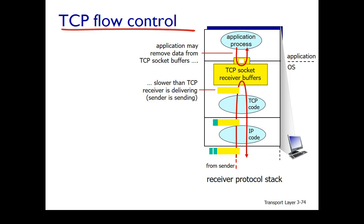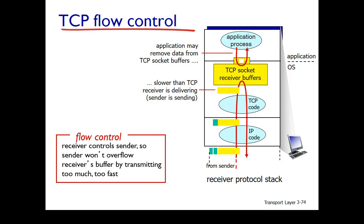What flow control does is that it controls the sender, such that the sender won't overwhelm the receiver's buffer by transmitting data too much and too fast.